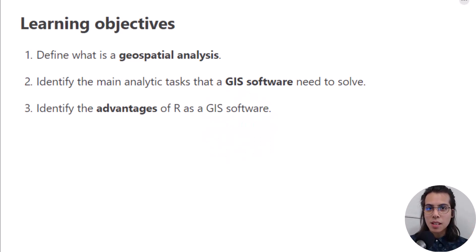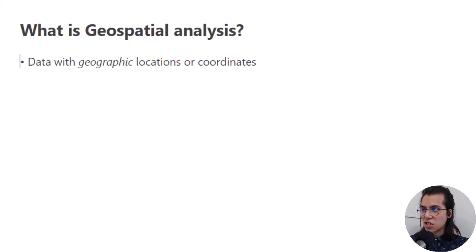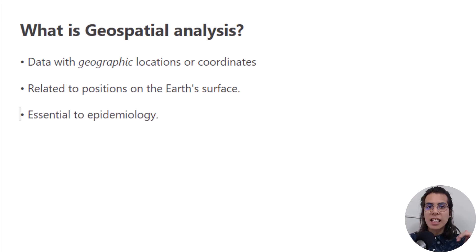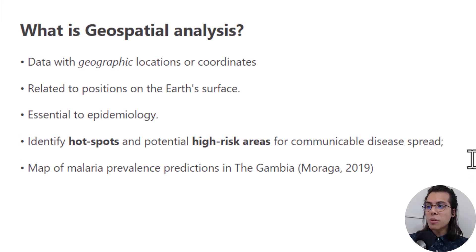Here are the learning objectives and you can pause this video to read through them. We are going to start with what is a geospatial analysis. A geospatial analysis implies analyzing your data with geographic locations or coordinates — information related to certain positions on the Earth's surface. This analytic task is essential for epidemiology. For example, you can identify hotspots and potential high-risk areas for communicable disease spread. As an example, we are going to see how to build a map of malaria prevalence predictions in the Gambia.